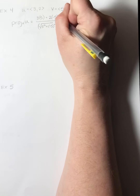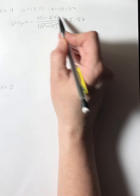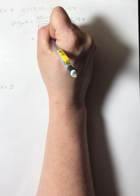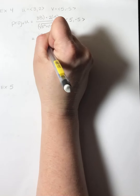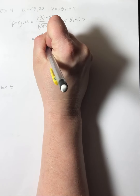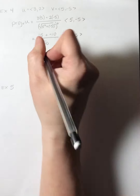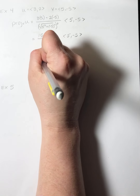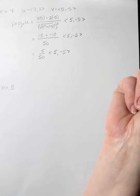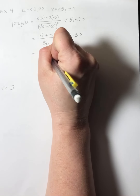Unlike the angle formula, we now need to multiply this scalar times vector v. So computing the numerator: 15 plus negative 10 is 5, over 25 plus 25 which is 50 — those cancel. So on top we have 5 over 50, which reduces to 1 tenth.